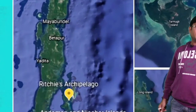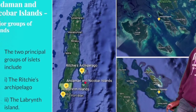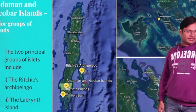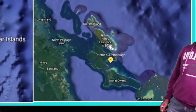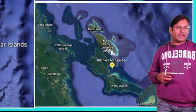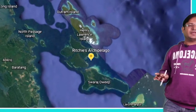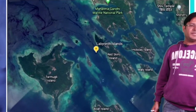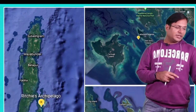If you see in this picture, this is the complete Andaman and Nicobar Islands. There are two major series of islands. The first is Ritchi's Archipelago — these are very small islands that look like small dots from above — and the second is the Labyrinth Islands.